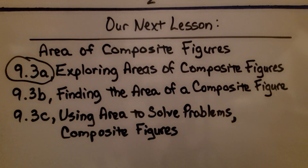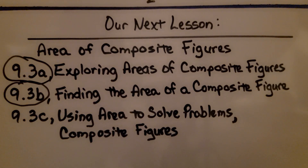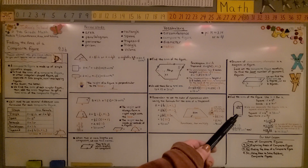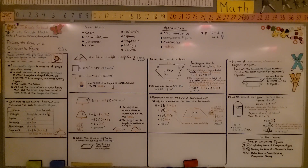We're finished with part 2. We're going to move on to the last part of 9.3 — using area to solve problems for composite figures. Remember to look at diagrams carefully, be aware of unnecessary information, but also look for helpful information, like how the 6 cm side of the square helped us find the radius for the semicircle. Have a great day and join me for the last part of the lesson.